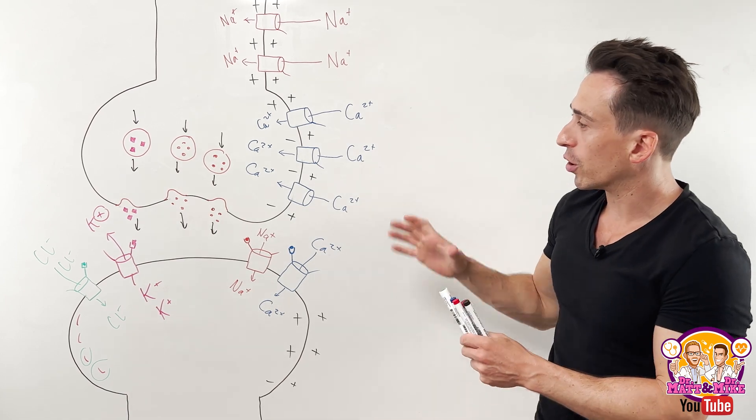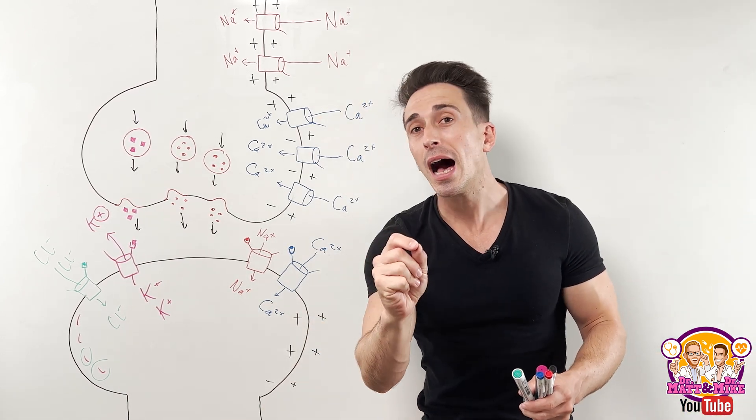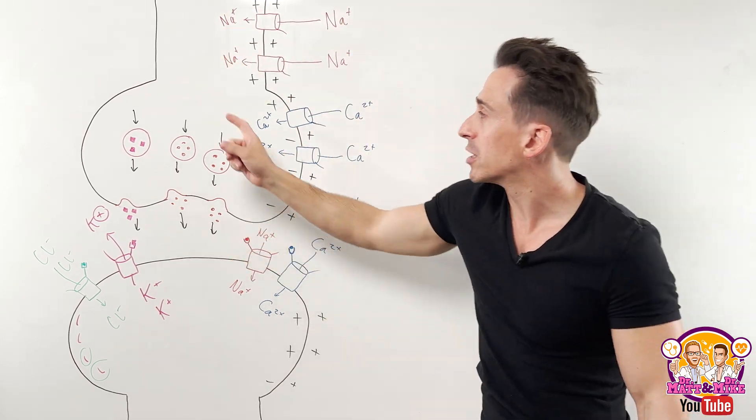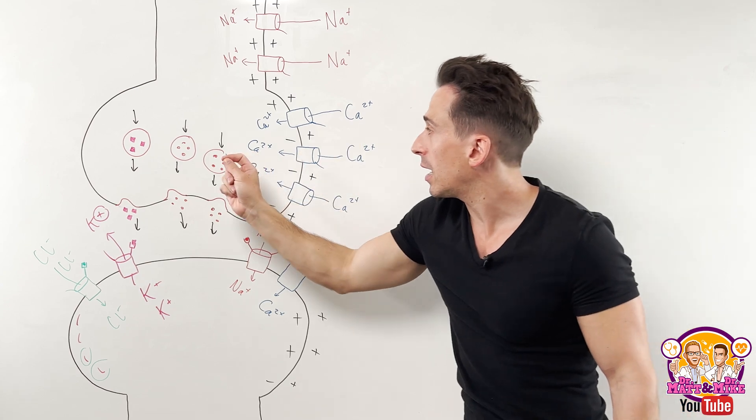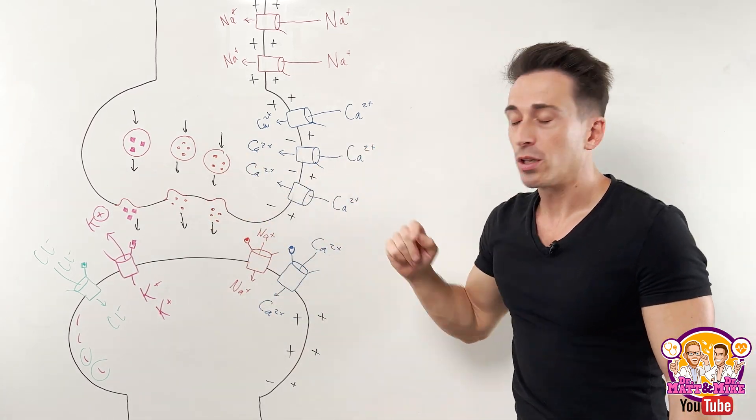So if we take a look at synaptic transmission, the steps are an action potential travels down the axon until it hits the synaptic terminal. Here, it triggers voltage-gated calcium channels to open up.